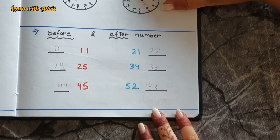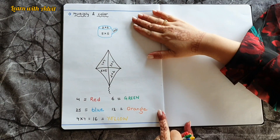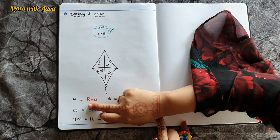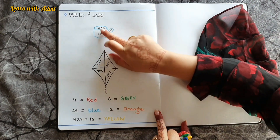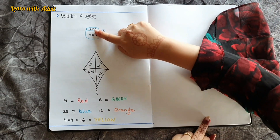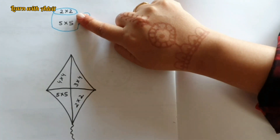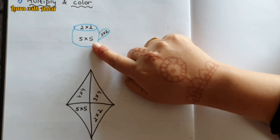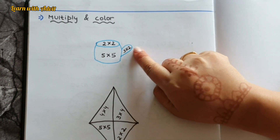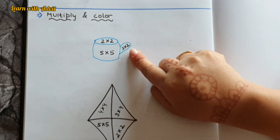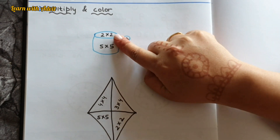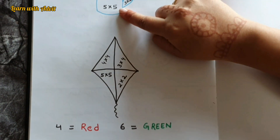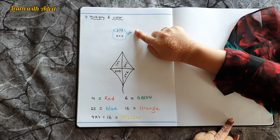In this sheet you have to do multiplication. Multiply and check the answer — whichever color it is, color it in. Tell me: two times two is? Four. Five times five? 25. Three times two? Six. So two times two equals four — that's red. Five times five equals 25 — that's blue. And three times two equals six.